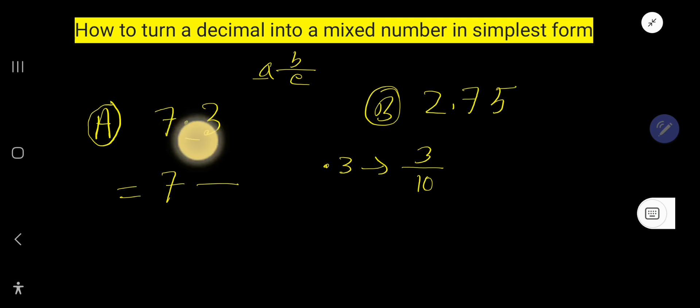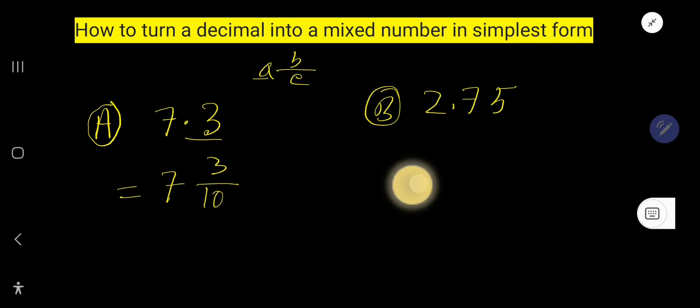So instead of 0.3, we can write 3 over 10, right? So look, there is no common factor between 3 and 10. So this is the simplest form or reduced form of the decimal number 7.3.